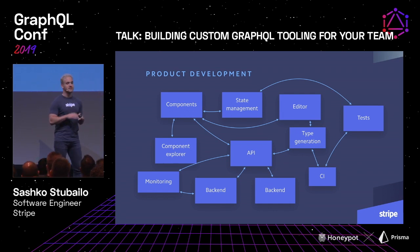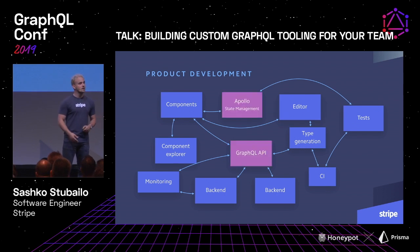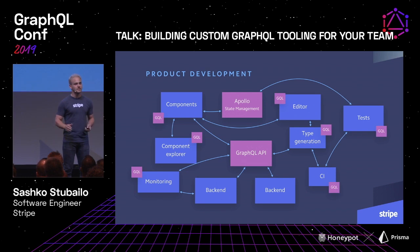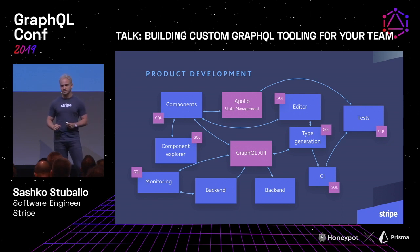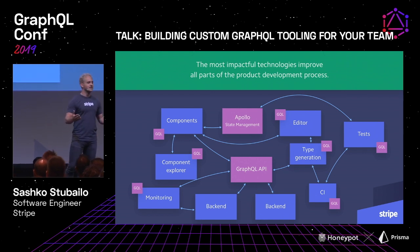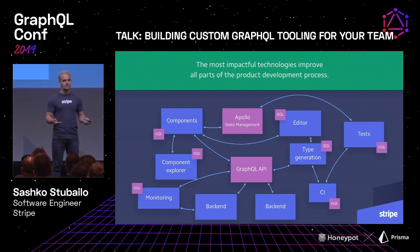Actually, product development looks a little bit more like this. There are all these other things you have to deal with — testing, static types to catch bugs, probably different back ends, monitoring to make sure it all works in production. And so you have to consider all these different things. Initially when we were adding Apollo and GraphQL, we were going to replace our state management and improve our API layer. But it turns out the impact has been far wider, because GraphQL is one of the relatively unique technologies that can impact all the different parts of your product development process.